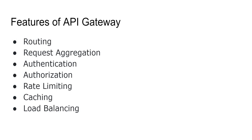Now the main top level features of a standard API Gateway are routing, request aggregation, authentication, authorization, rate limiting, caching, and load balancing. But most API Gateways out there in the market have way more features than this. Even Ocelot has many more features than what I have listed here — you can check it out on their website. But these are the most common and heavily used features in my experience.